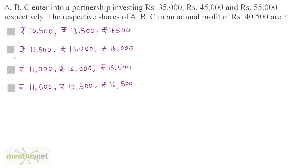A, B, C enter into a partnership investing 35,000 rupees, 45,000 rupees and 55,000 rupees respectively. The respective shares of A, B and C in an annual profit of 40,500 are? Since these people have invested these amounts for the same time period, the ratio of their profits equals the ratio of the amounts they invested.